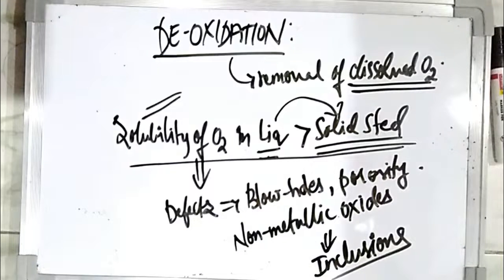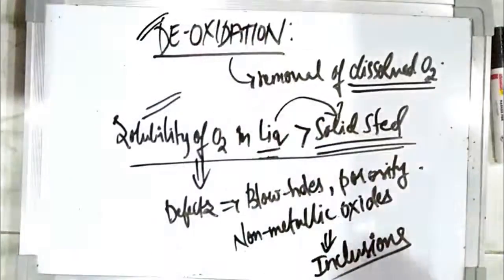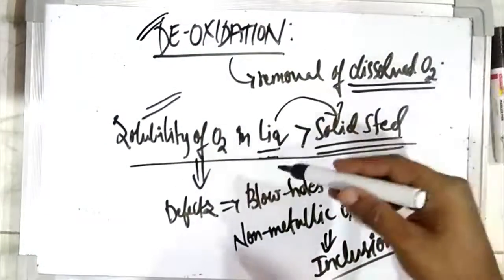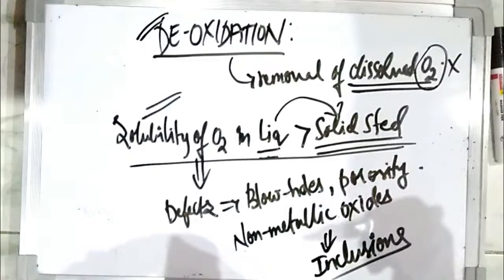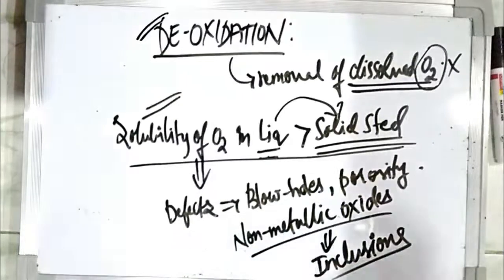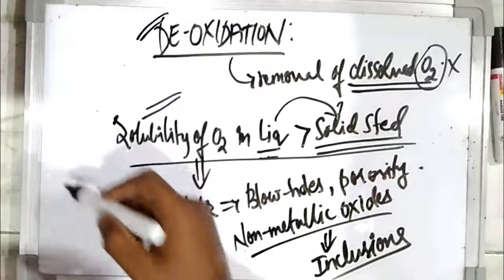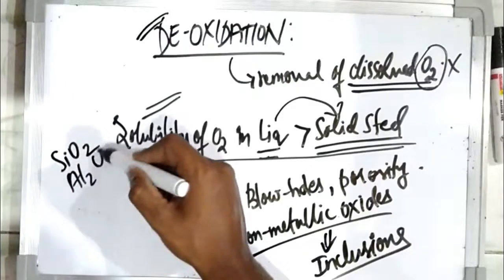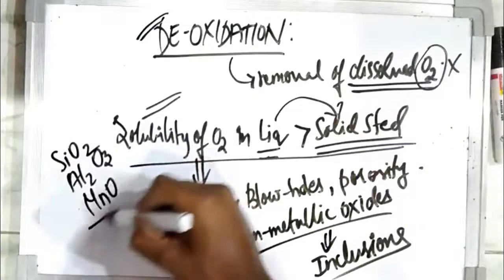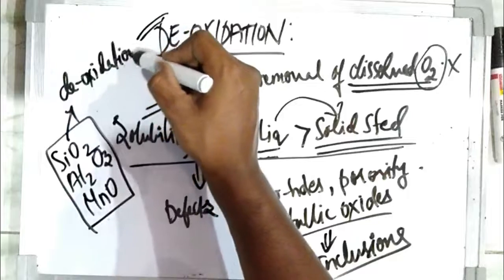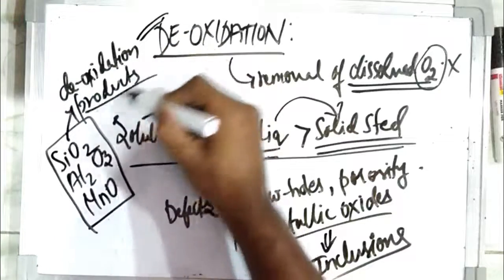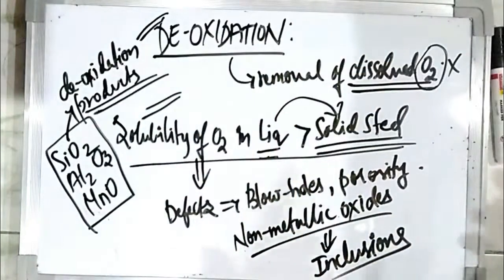That is why removal of oxygen is required. This process is known as de-oxidation. This dissolved oxygen cannot be removed as molecular O2; instead, it forms products such as SiO2 and Al2O3 — these are the deoxidation products. So the oxygen is removed in the form of these deoxidation products.